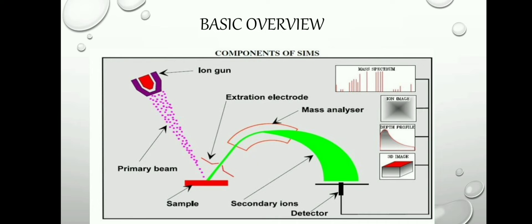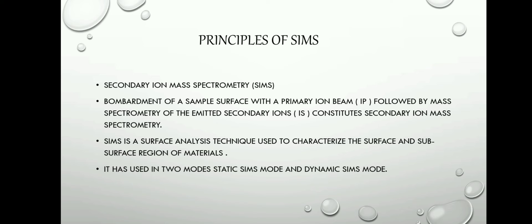Here is the basic overview of the secondary ion mass spectrometer. In this figure, we can see that it has an ion gun, primary beam, extraction electrode, mass analyzer, sample, secondary ions, and a detector.